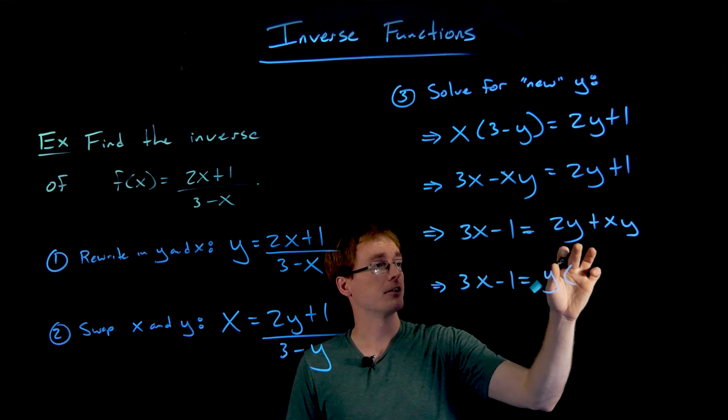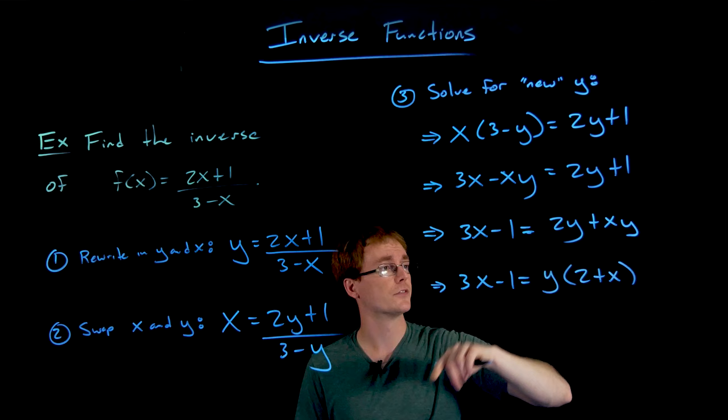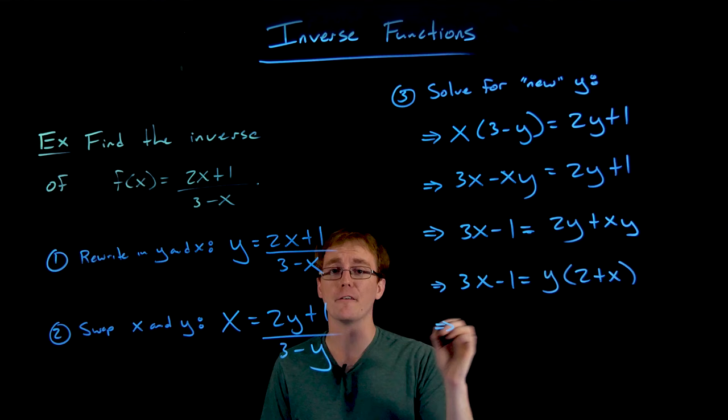So if I factor a y out of 2y plus xy, I'm going to be left with 2 plus x, right? We can always redistribute or expand that quantity to double-check our work. y times 2 gives us 2y. y times x gives us xy. It's looking good. And now we're just about finished with this step.